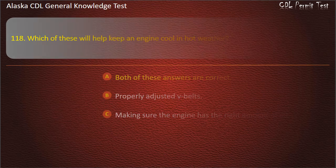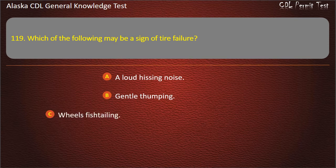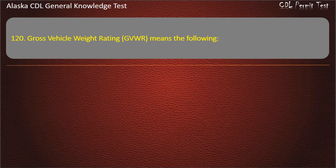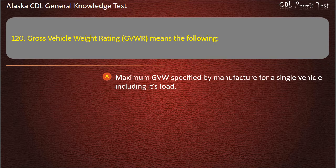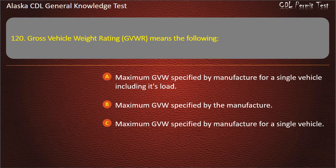Question 119. Which of the following may be a sign of tire failure? A loud hissing noise. GVW means the maximum GVW specified by the manufacturer for a single vehicle including its load. Answer: A loud hissing noise.